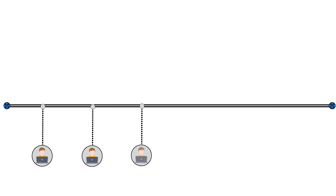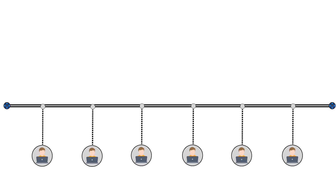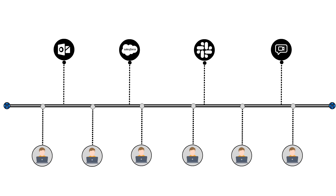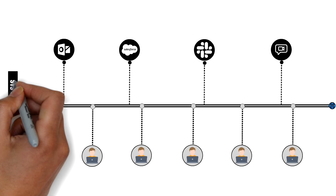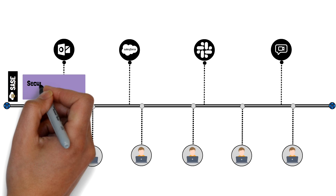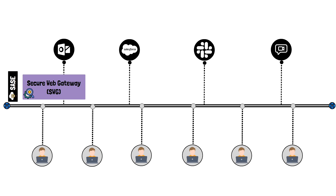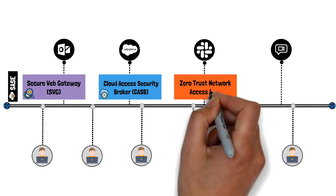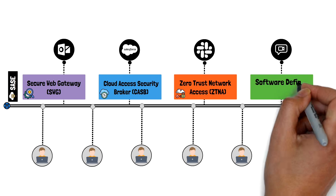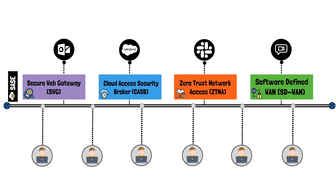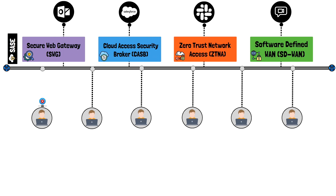SASE's adoption has exploded over the last few years, but what if moving to the cloud isn't an option? As organizations increasingly migrate from on-premise environments to cloud-first and work-from-anywhere, the need for a security framework like SASE becomes more apparent. By offloading security to the cloud instead of the premise, SASE allows organizations to apply cloud-based security closer to where their applications and services are located. The challenge is, for many organizations, sending all your traffic to the cloud is not ideal.